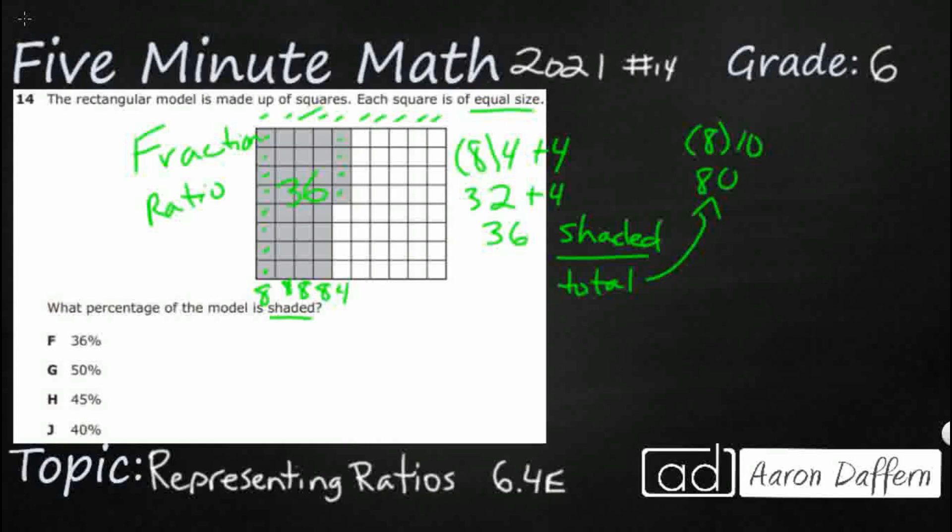And I've got 36 shaded. So I can look at it if I want as 36 80ths or ratio would be 36 to 80. How do we turn that into a percentage? Well, there is a slow way and there's a way that might be a little bit faster. Let's try the slow way.